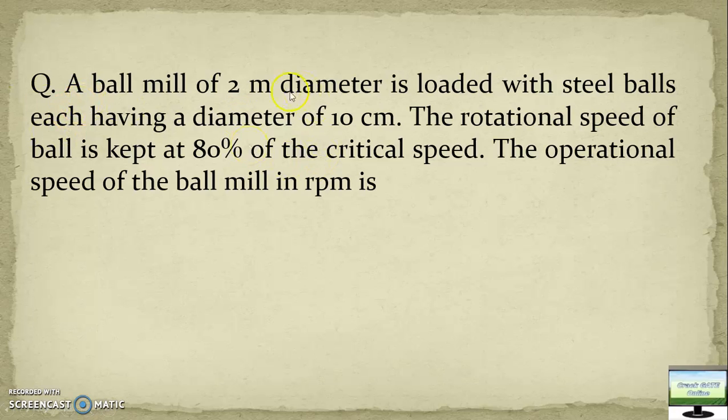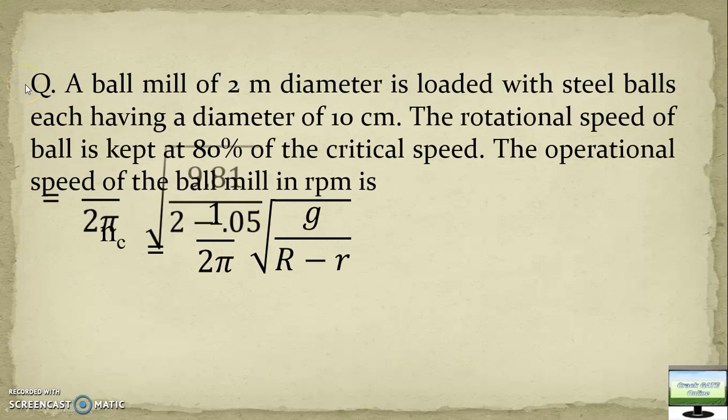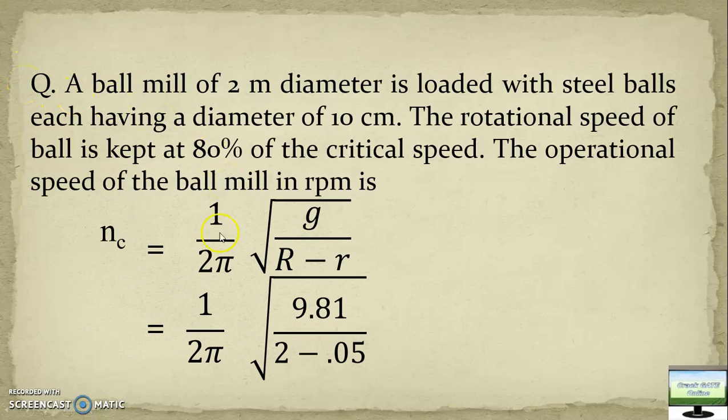This is one question for practice. You pause the video and read this question. I am solving this question for you. A ball mill of 2 meter diameter is loaded with steel balls each having a diameter of 10 cm. The operational speed of ball is kept at 80% of the critical speed.